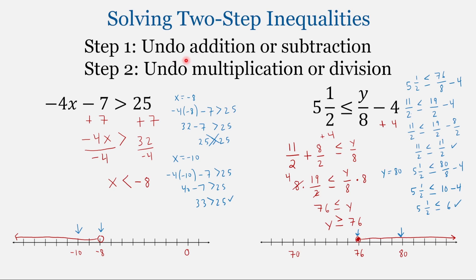Reversing the order of operations to solve equations and inequalities is a best practice and often makes the math simpler. It's like how we dress ourselves. In the morning when you get dressed, first you put your pants on, and then your shoes. But in the evening, we reverse that process — shoes first, then pants. But can you take your pants off without removing your shoes? Yeah. It makes things more difficult, but it is still possible. Same here when we're solving equations and inequalities.